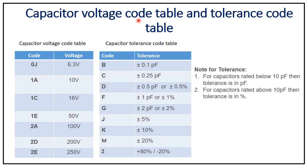The capacitor voltage code table maps letter-number codes to voltage ratings. For example: 0G = 6.3V, 1A = 10V, 1C = 16V, 1E = 50V, 2A = 100V, 2D = 200V, and 2E = 250V.